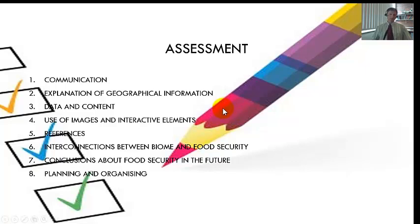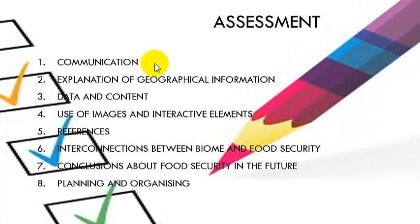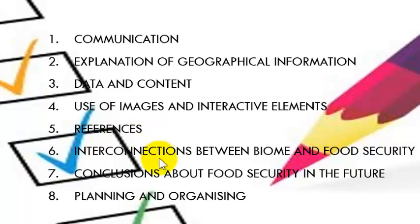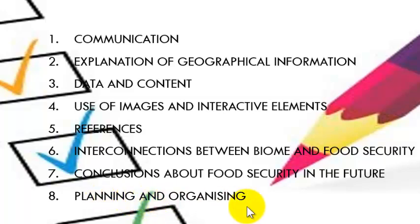For your assessment, there are eight elements I'm going to assess you on: how well you've communicated, which covers how well the website looks and works, including the interactive elements; the geographic information — I need data and content such as tables, maps, and graphs, which is part of Criterion 4; using images and interactive elements; putting your references in. Another important knowledge criterion is the interconnection between the biome and food security — for example, if it's fish being overfished, how can this be managed in the future? That's element seven. And finally, how organized and planned you are, both to get the task done and how you work in class.